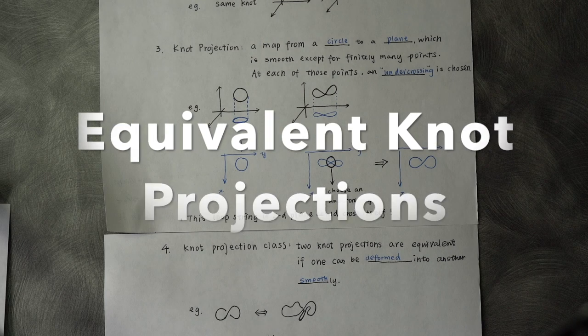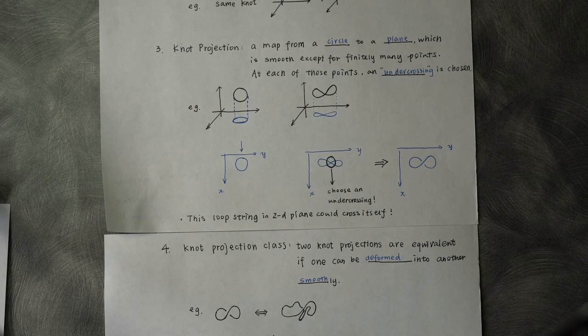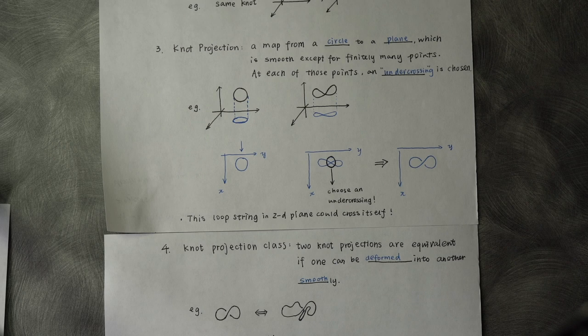As how we defined equivalent knot class before, we define two knot projections equivalent if one can be deformed into another one smoothly. For example,